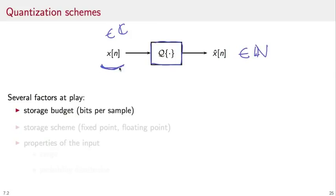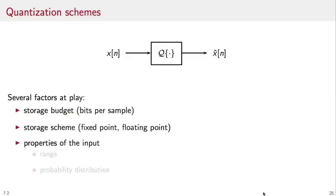We model the input as a stochastic process and to study the effects of the system we have to consider several factors. How many bits per sample this quantizer will allocate? What is the storage scheme used to represent the quantized samples? For instance, is it fixed point or floating point? And what are the properties of the input as a stochastic process? What is its range and what is its probability distribution?